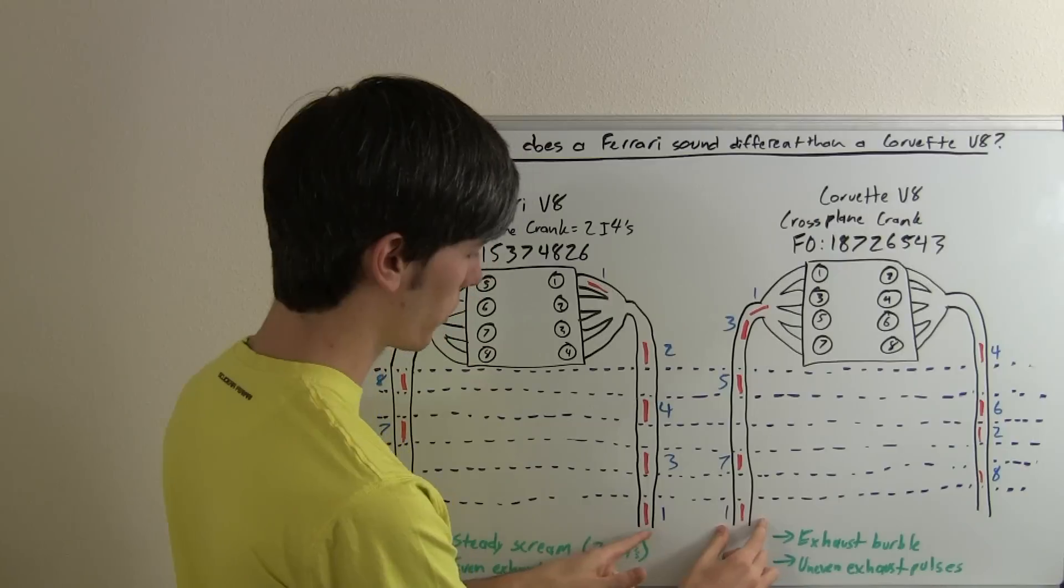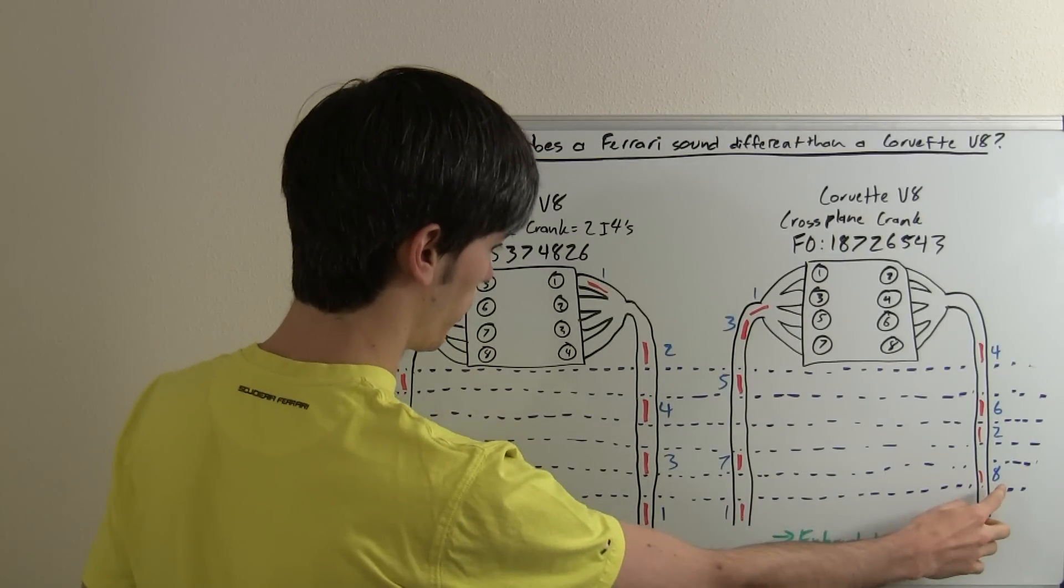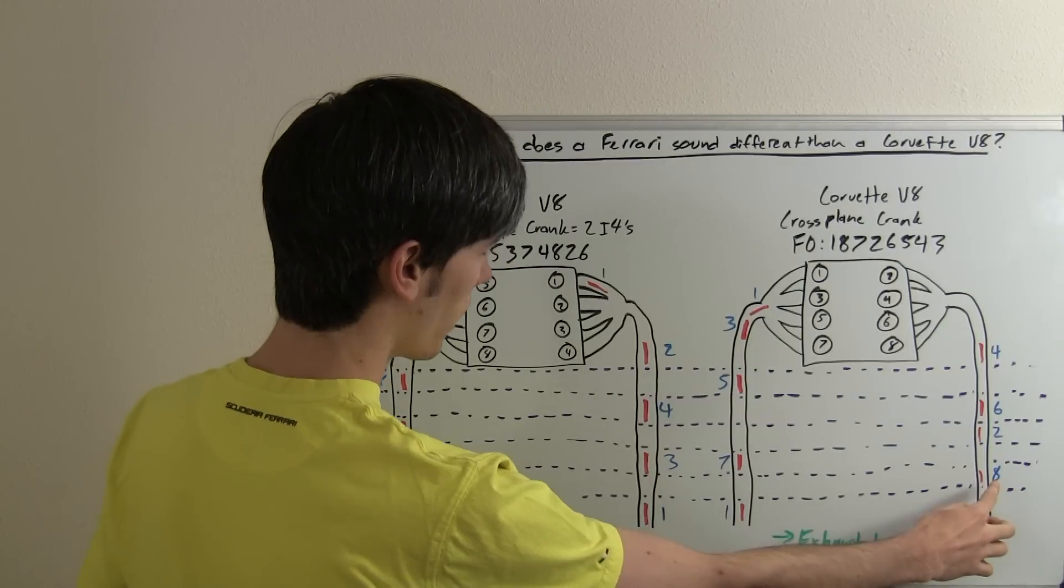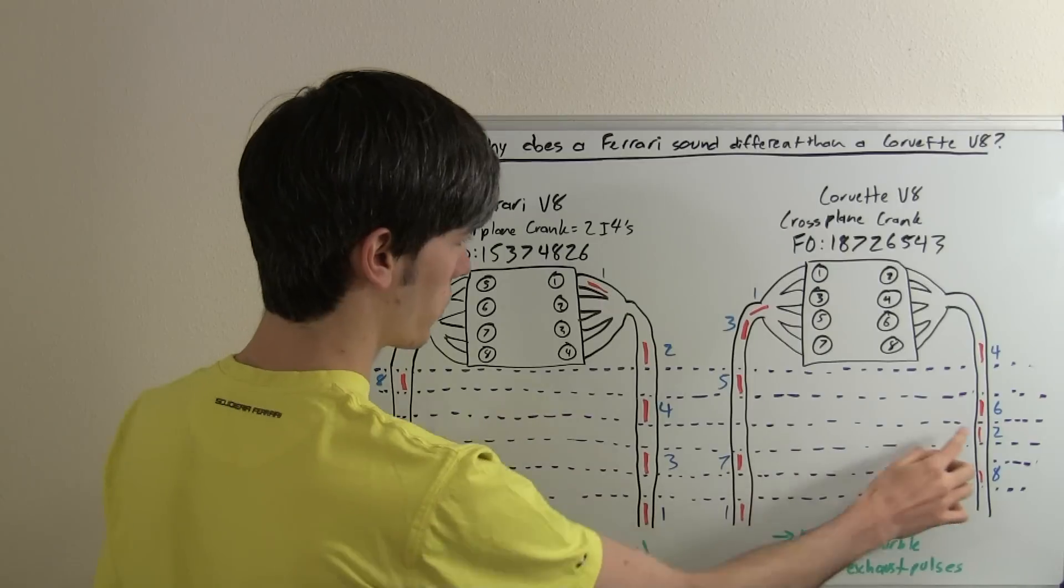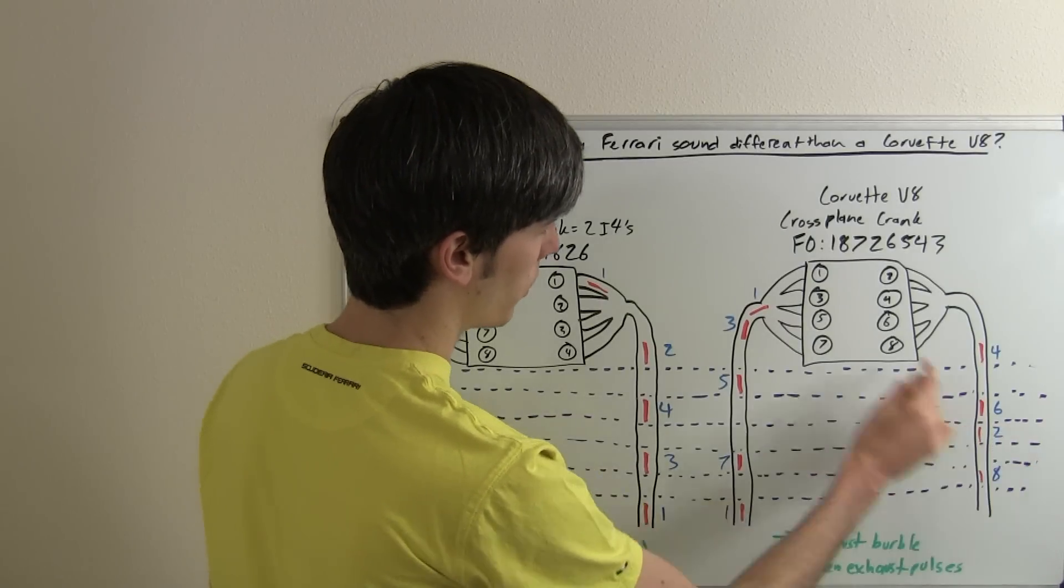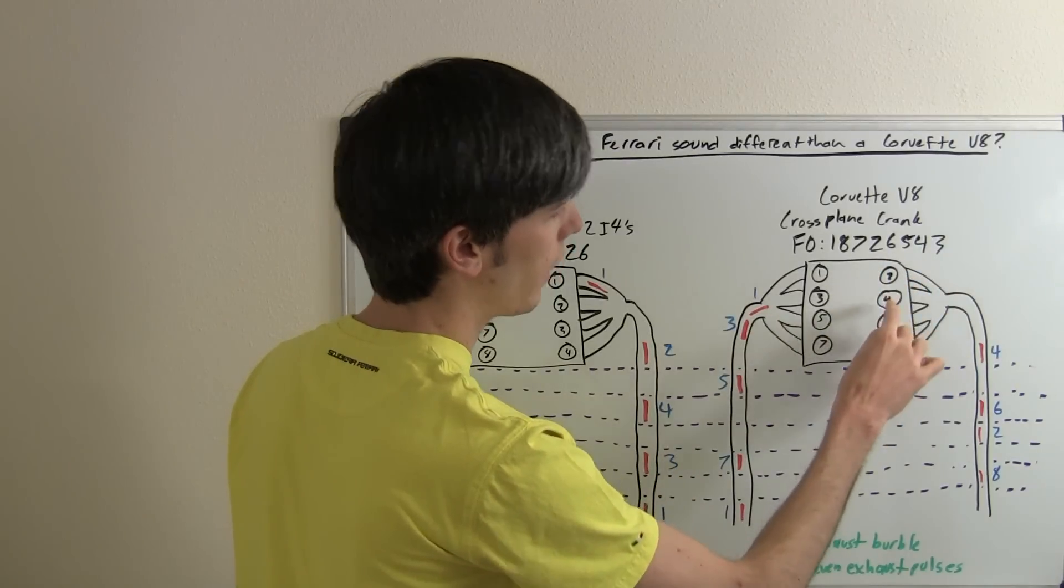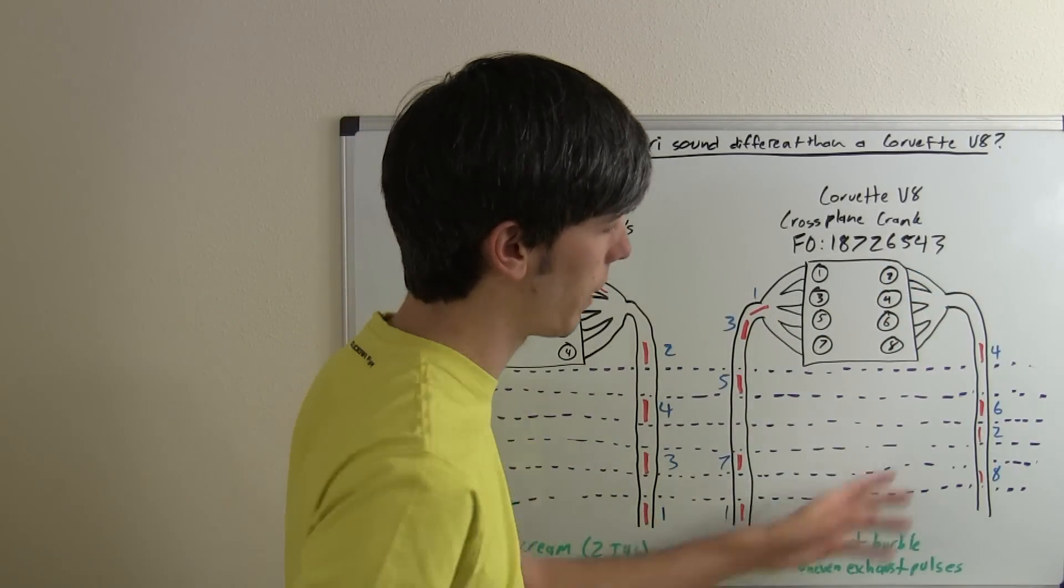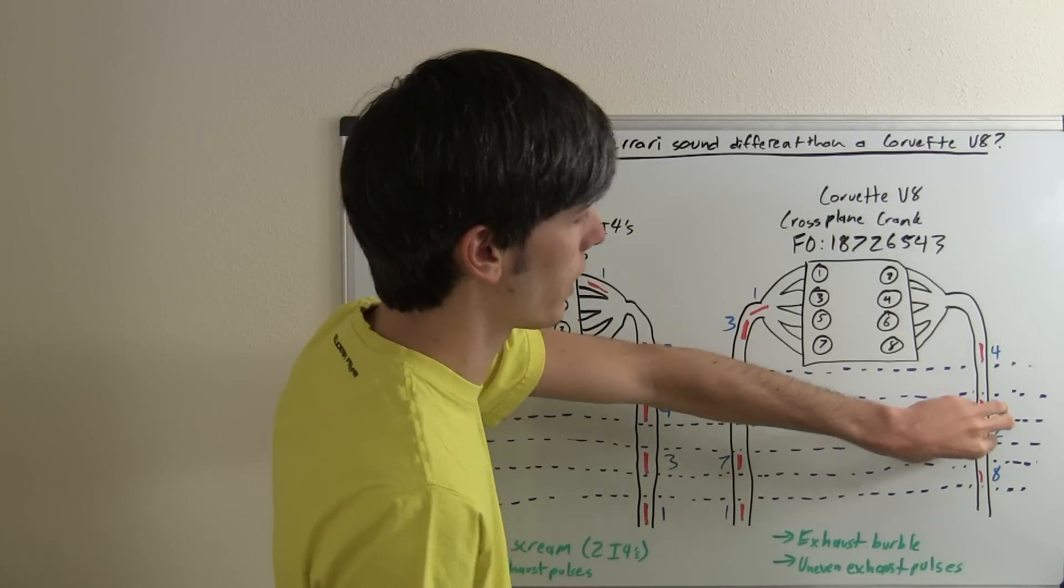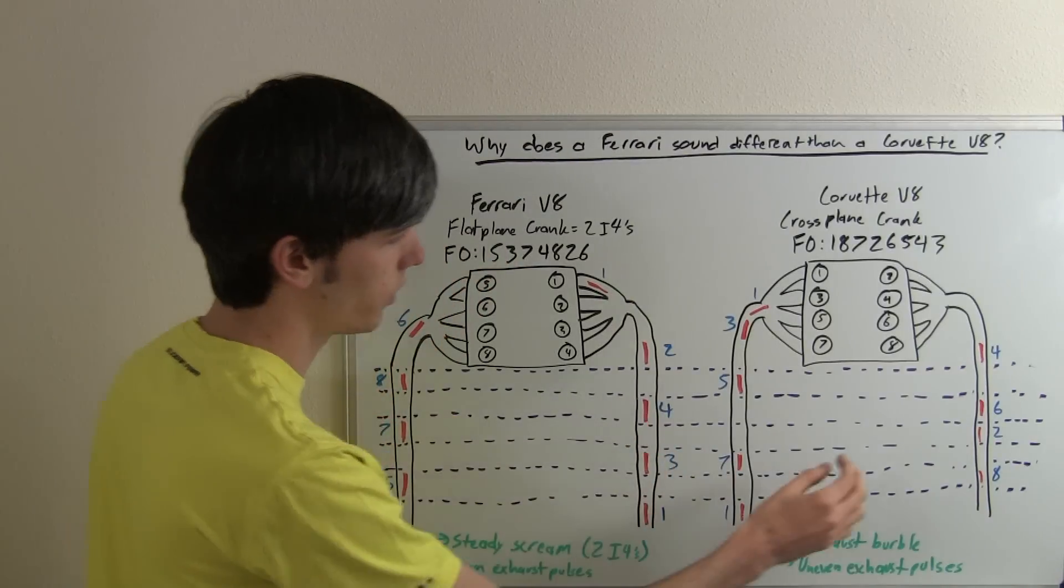So first, we'll have our first exhaust pulse, just like we did on this side. It's just going to be on the opposite side. Then our 8th fires, so so far it looks the same. Then 7, we've got even spacing so far. Then we go to 2, and then there's an exhaust pulse. And then we go to 6. So on the same cylinder bank, 2 cylinders are firing back to back. So we're going to have these 2 exhaust pulses back to back. So that's going to create a higher pressure exhaust pulse right there, rather than on this side where it's uniform.